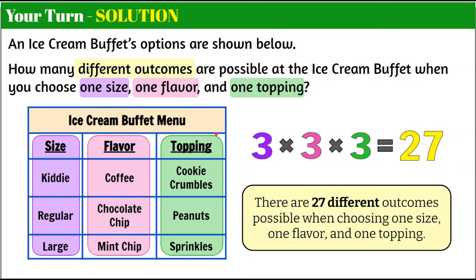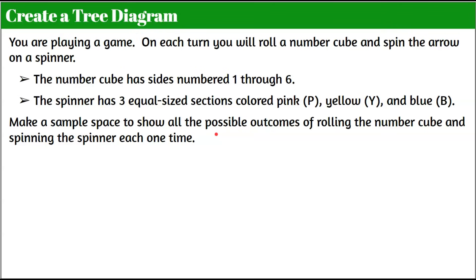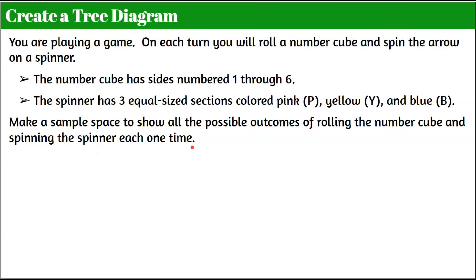Think about that — you could go to this ice cream buffet 27 days in a row and each time have a different outcome. Now I want you to create a tree diagram. Here's the scenario: you're playing a game. On each turn, you will roll a number cube and spin the arrow on a spinner. The number cube has sides numbered one through six. The spinner has three equal sections: pink, yellow, and blue. Make a sample space to show all the possible outcomes of rolling the number cube and spinning the spinner each one time. Go ahead and pause and come back when you're ready.